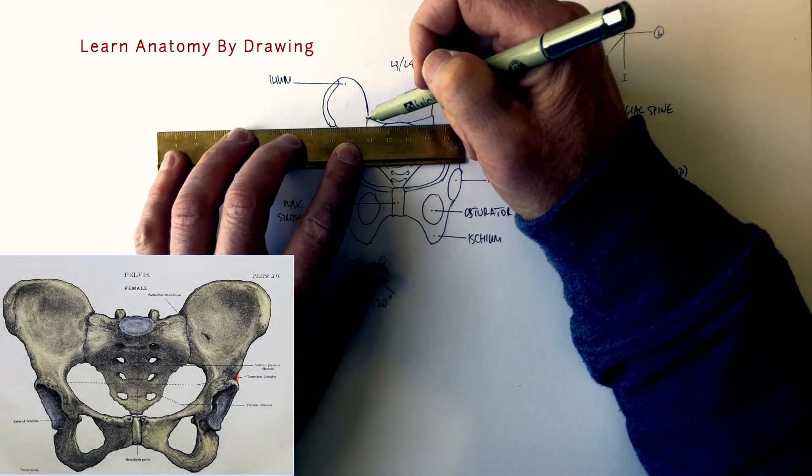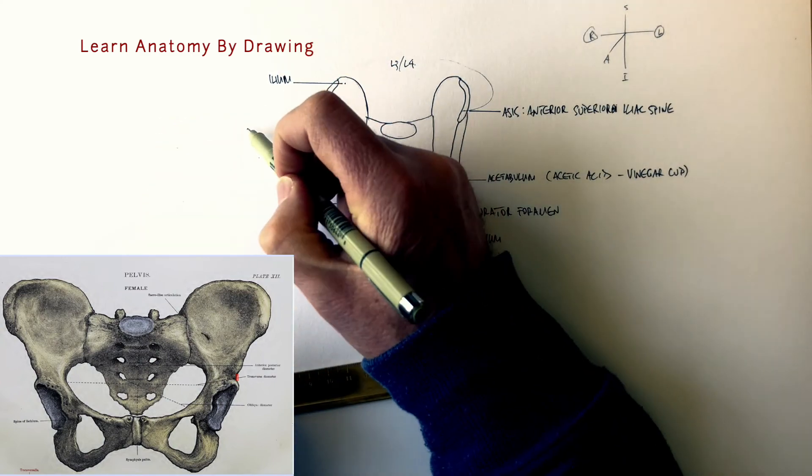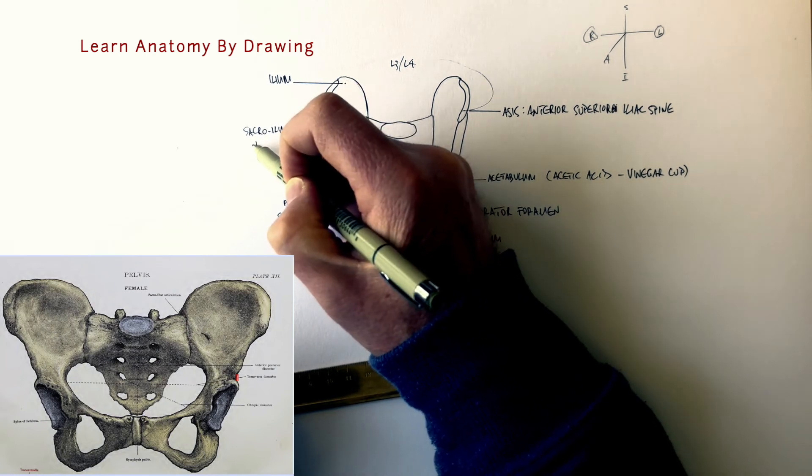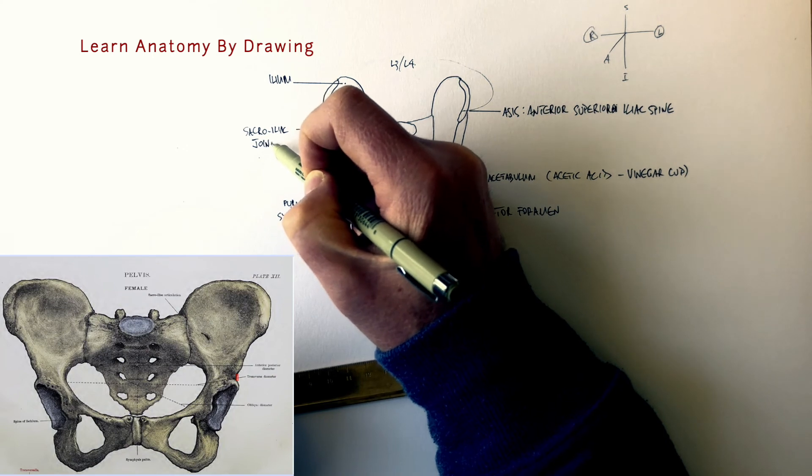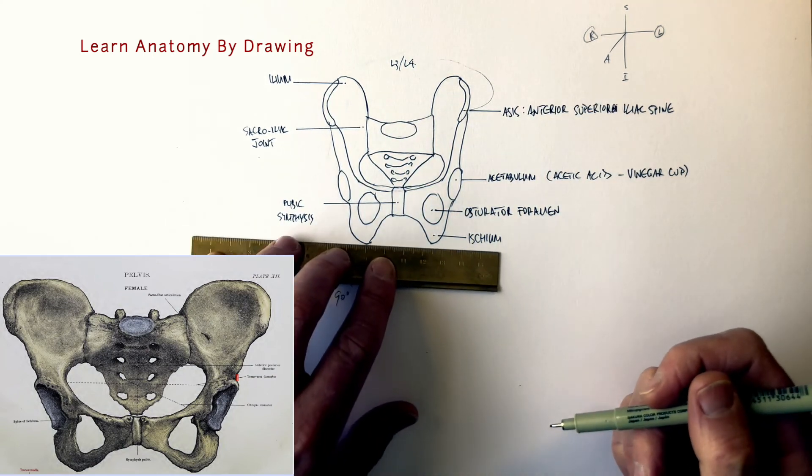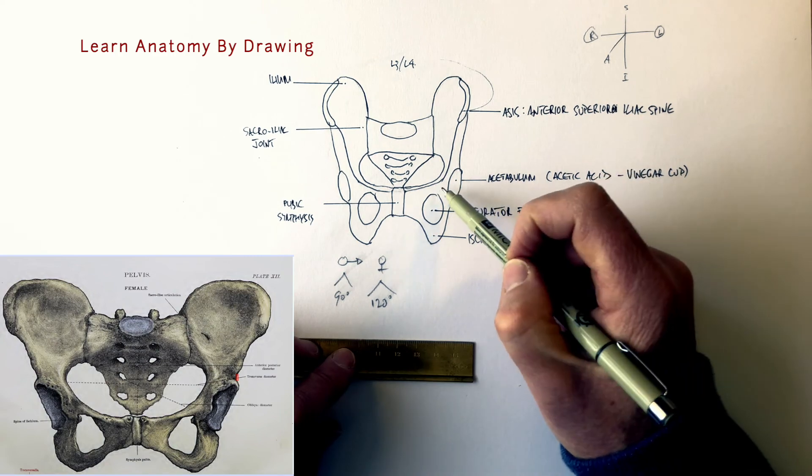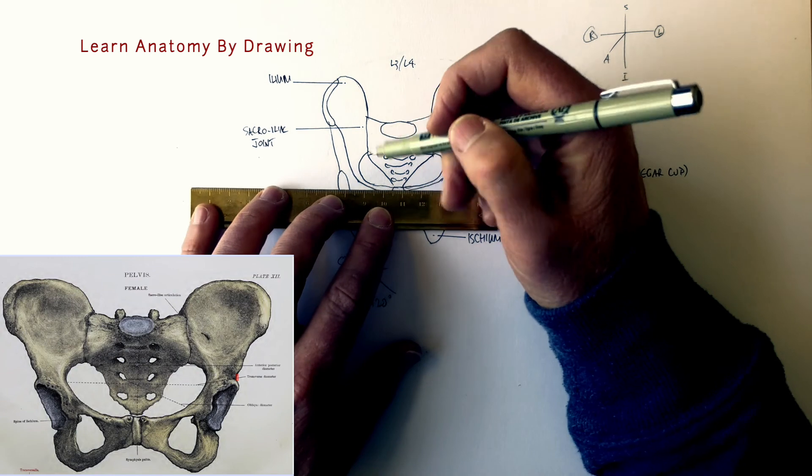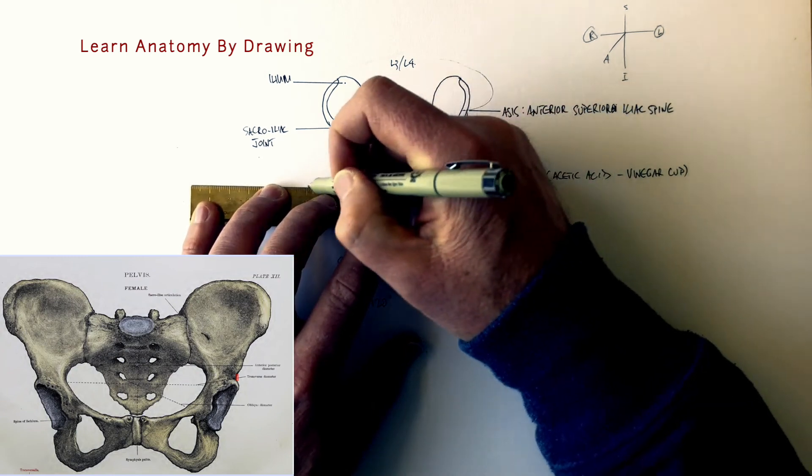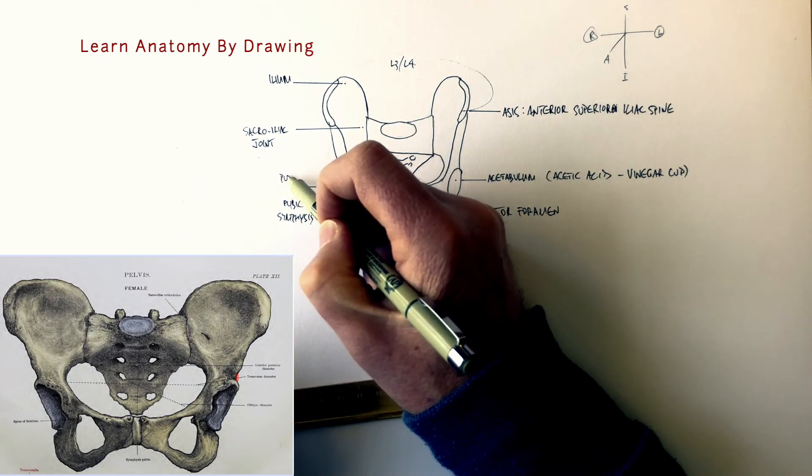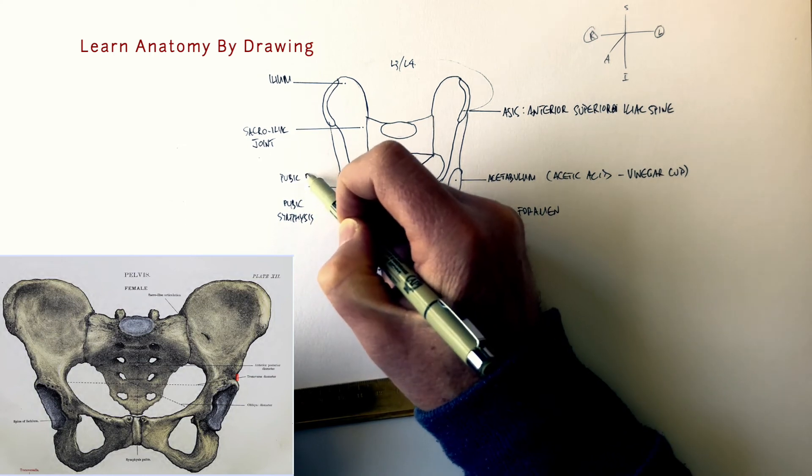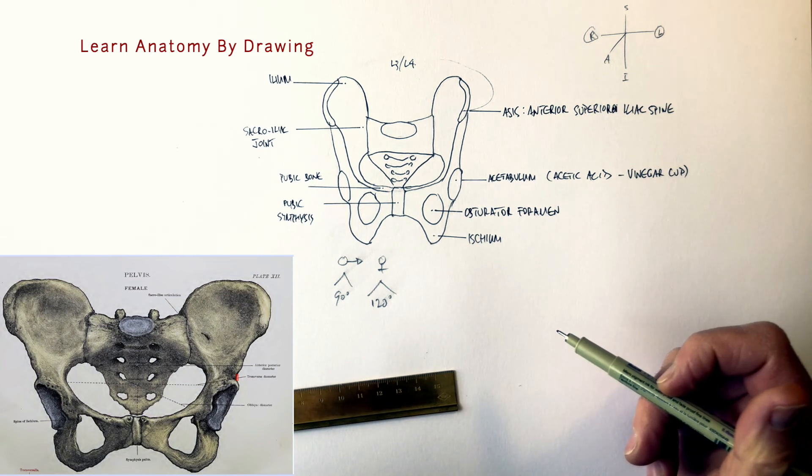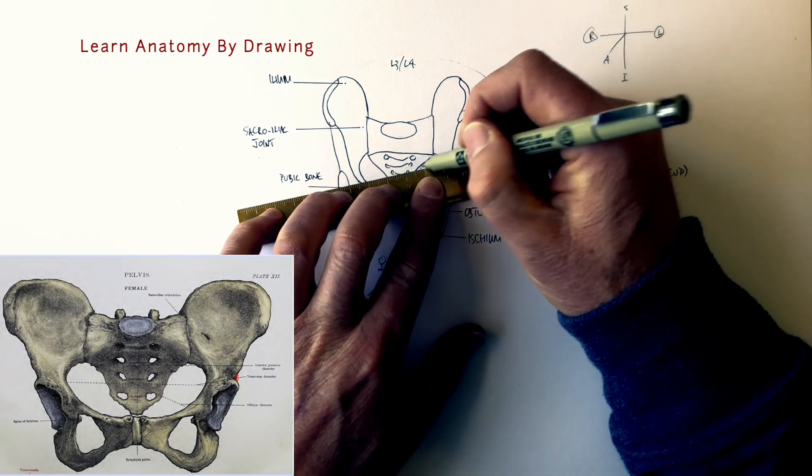This joint here is the sacroiliac joint. The pubic bone, this is actually made up of three bones and in the lateral view of the pelvis we'll get to that, but this here is really the pubic bone, hence the pubic symphysis. And lastly we have here the sacrum.